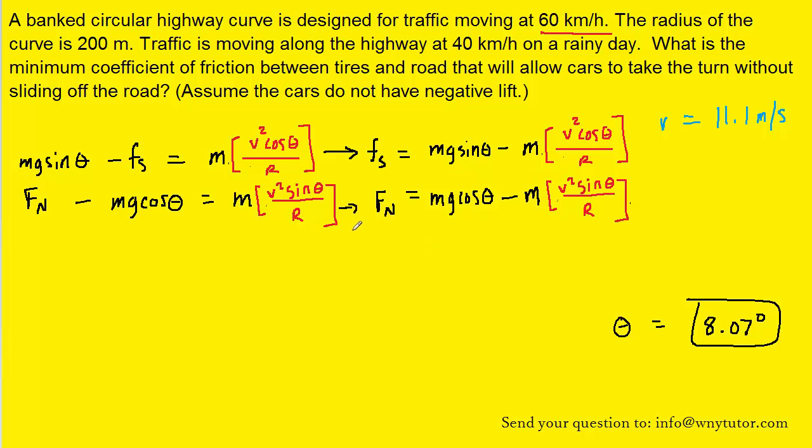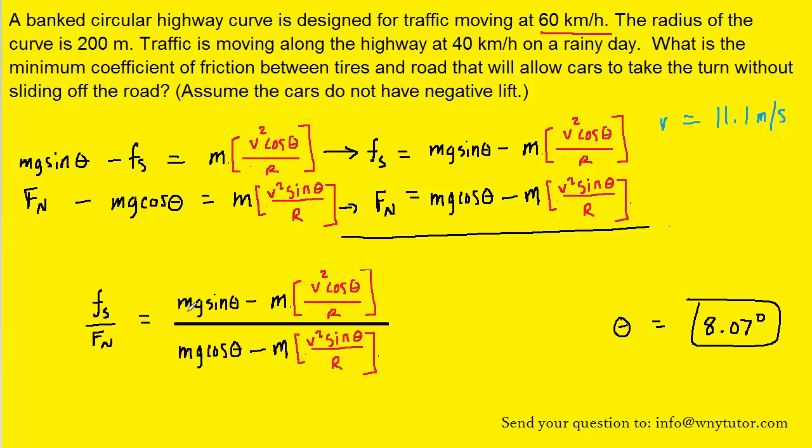We've purposely stacked those two equations on top of each other. What we're going to do next is divide them and we're going to see some convenient things happen. For one thing, mass appears in all four terms of that quotient so we can cancel it out. And then we can plug in all the known values.